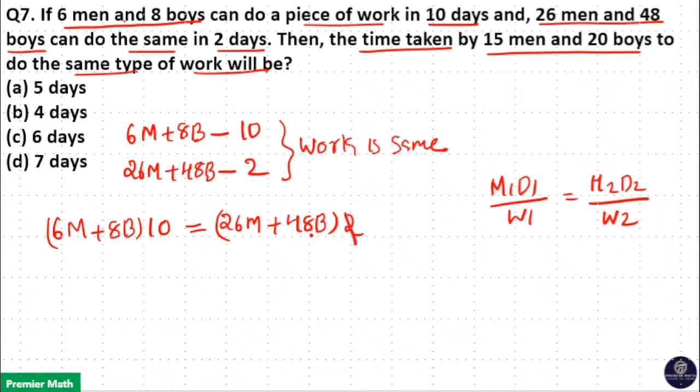So here 2 goes 5 times. 6 into 5 is 30. Here 26. So 4M = 8B, which is equal to 1M = 2B.